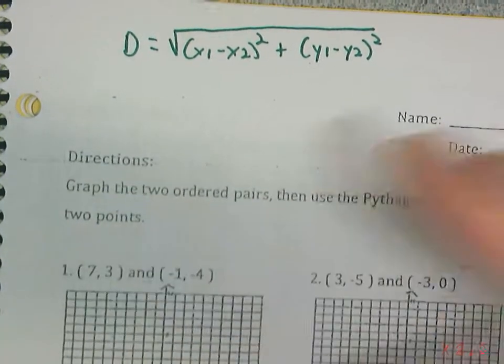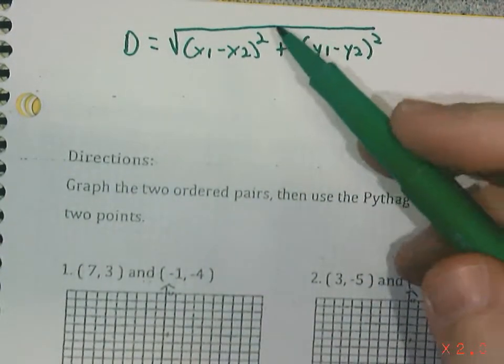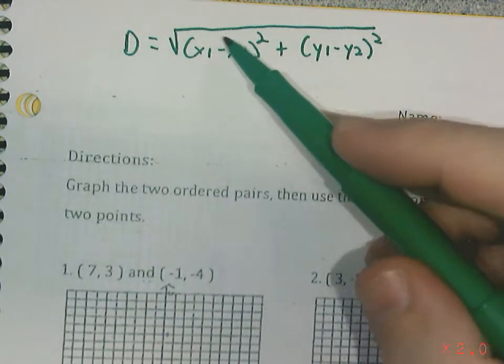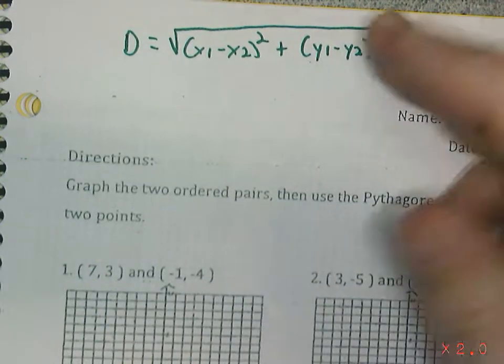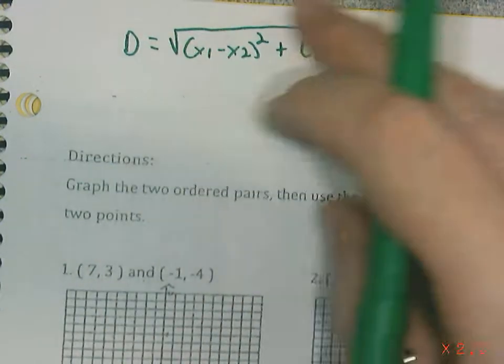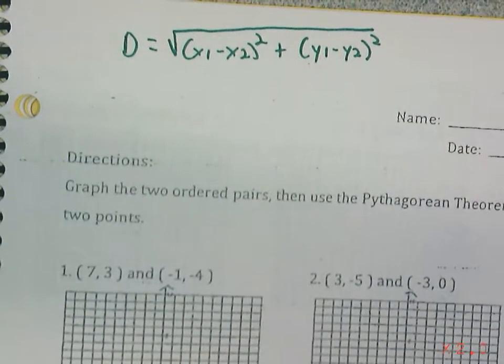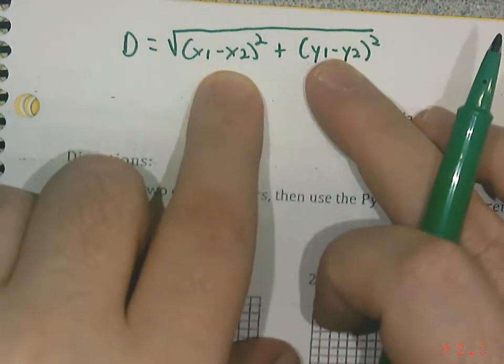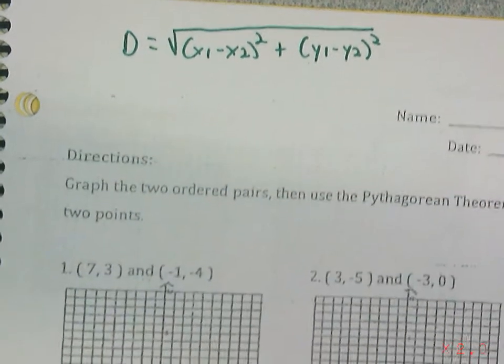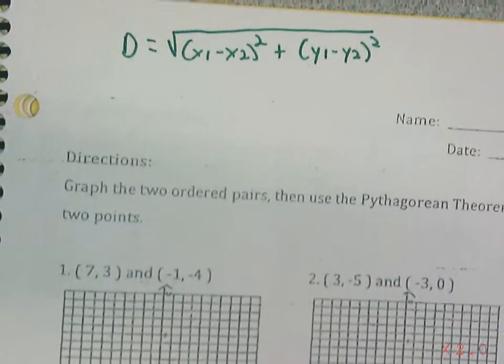Now, this looks very complicated, right? But all it's basically saying is if you take the difference in your x coordinates and square it, add it to the difference in your y coordinates and squared, add them together and square root, you would get your distance. This is kind of like saying a squared plus b squared equals c squared, and then you square root at the end to find your answer. This is just the Pythagorean theorem.